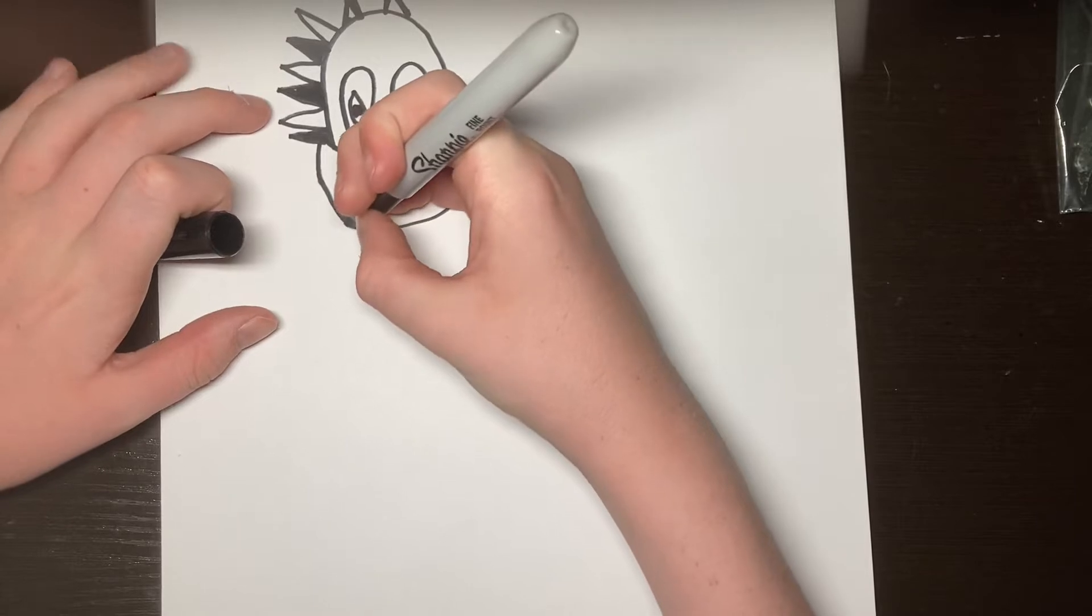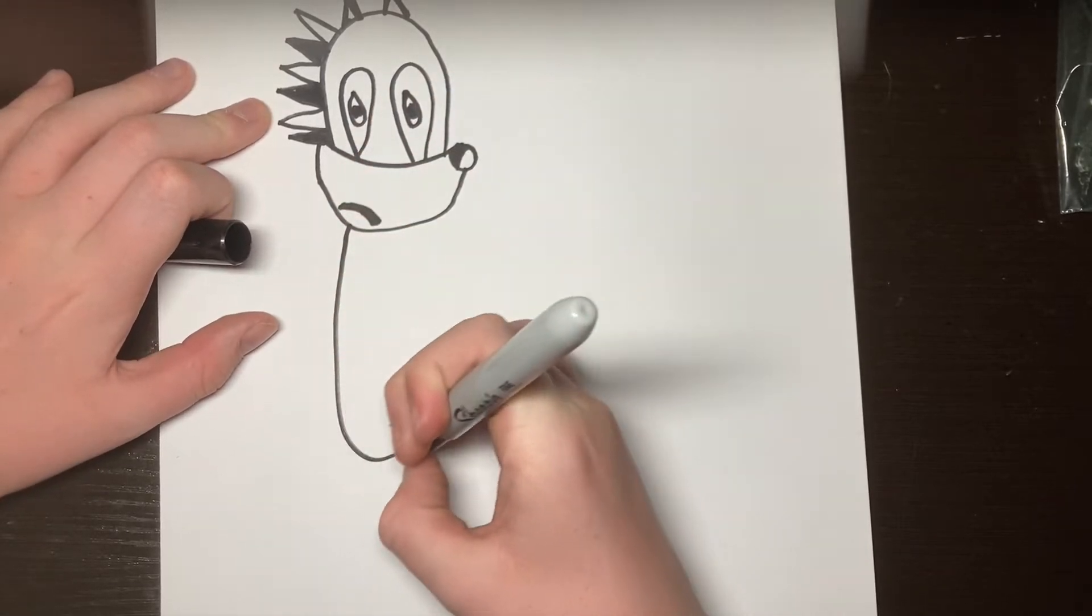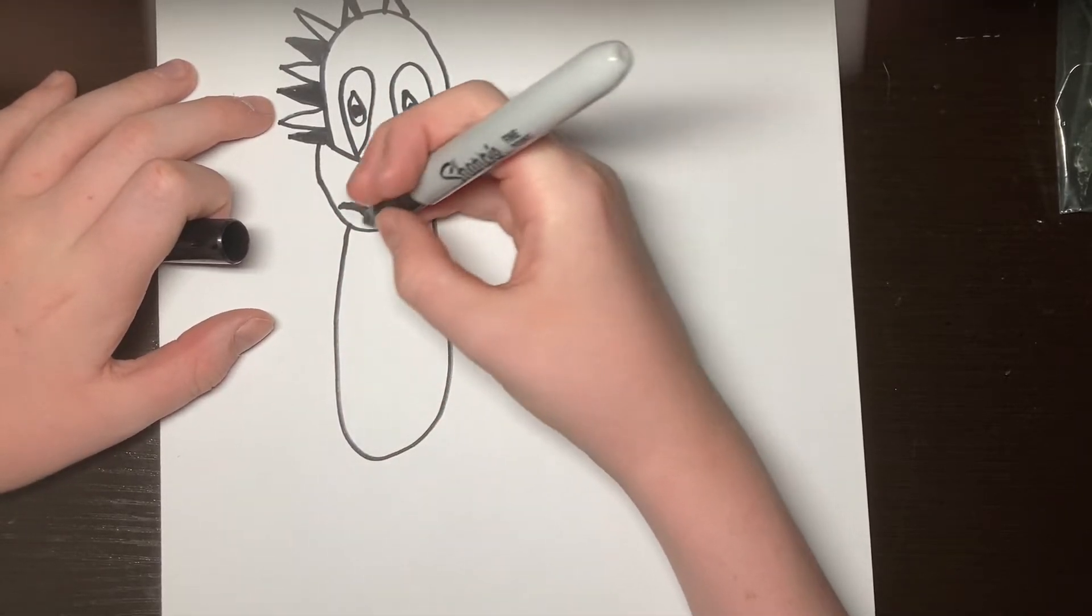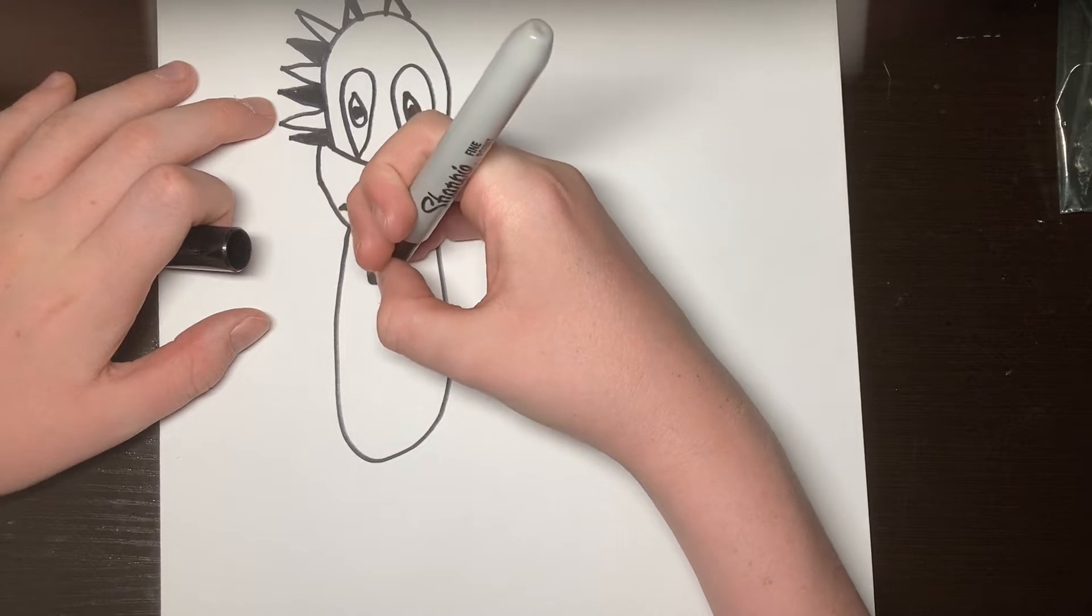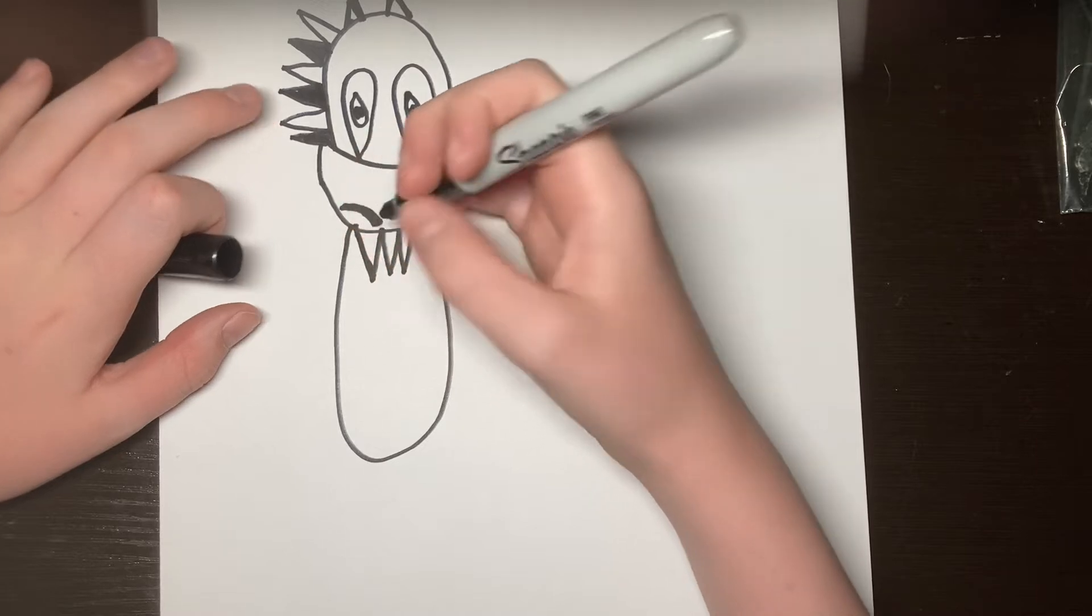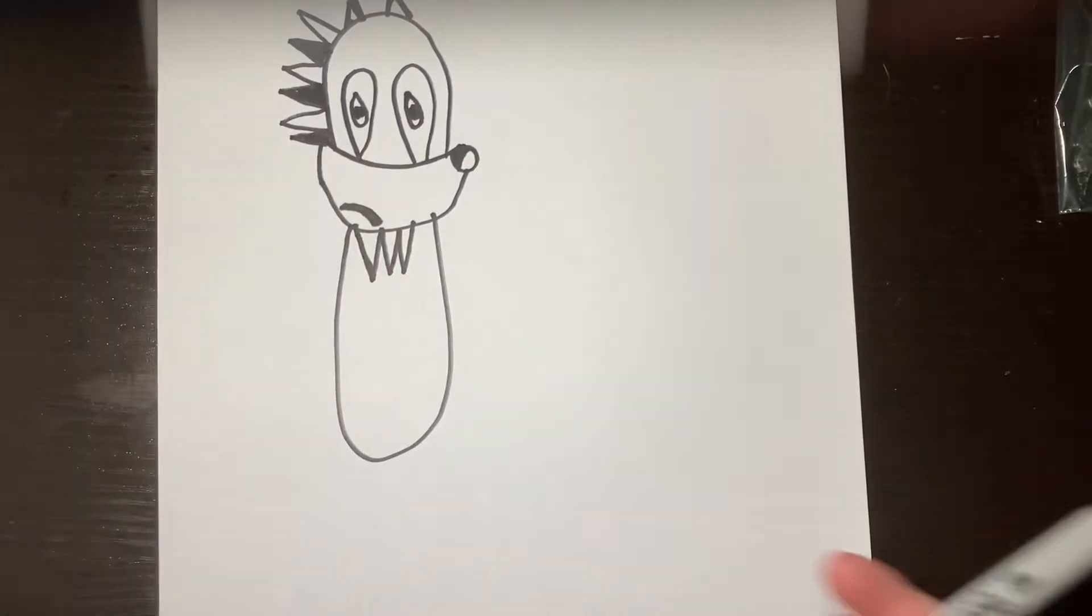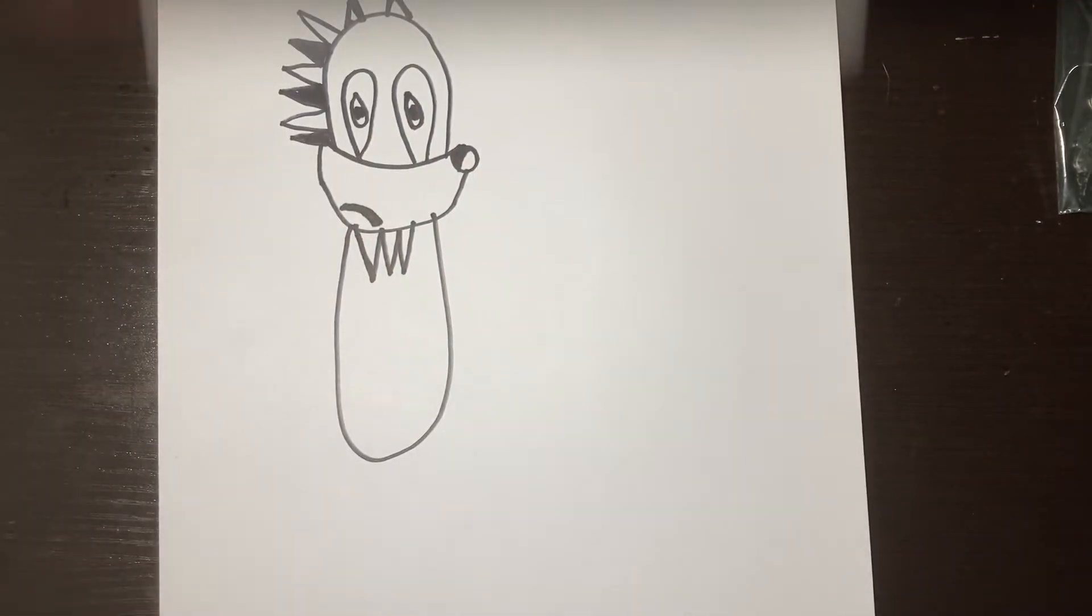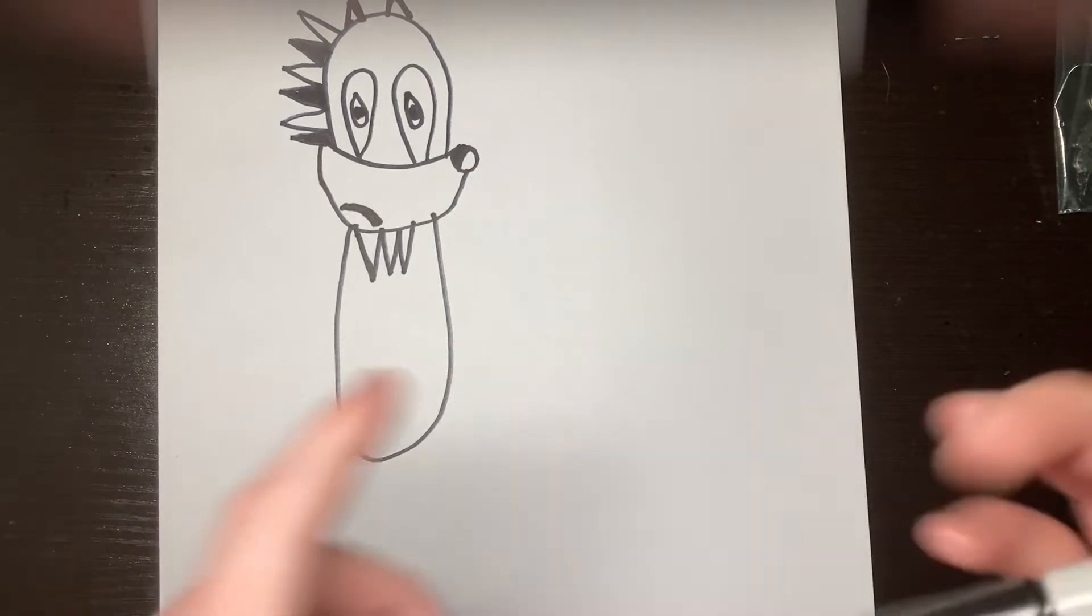Now we draw his body like this. And then we draw some like this. And then that. So, like, show the fur on his chest. But now leave that white.